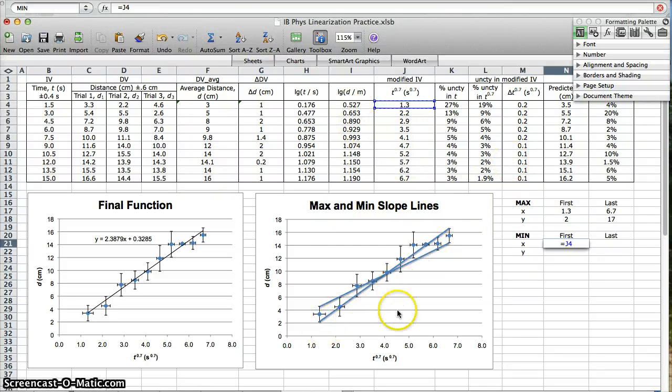For me, right now, my first x value is that. My last x value, time to the 0.7. Here's that column. Here's my last x value. The uncertainties, the error bars, come into play with the y values.